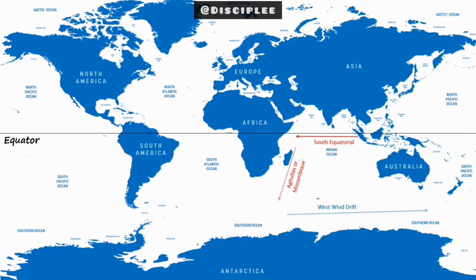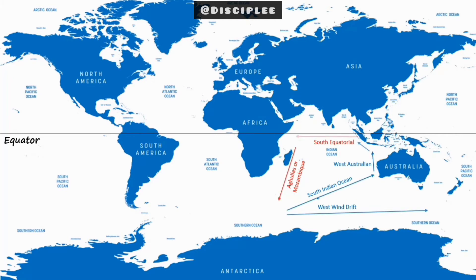This merges with the West Wind Drift, flowing eastwards, and then turns equatorwards as the West Australian current.